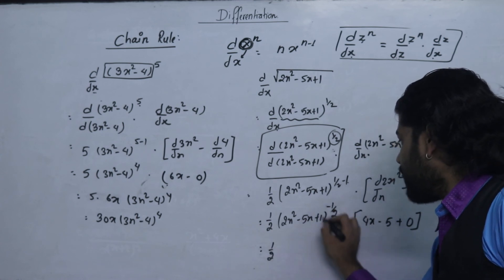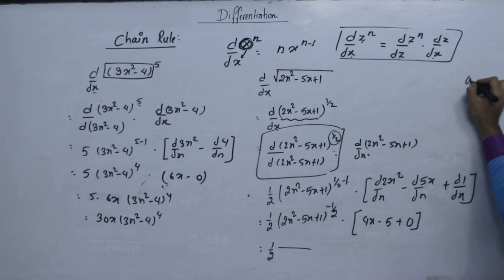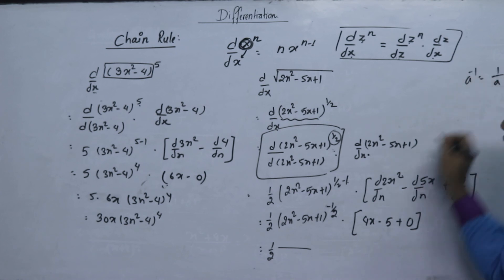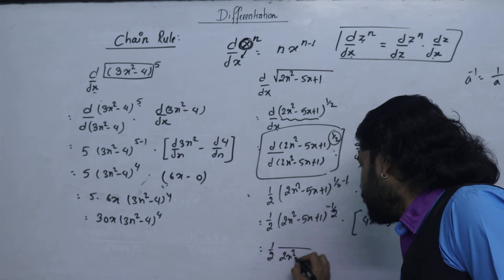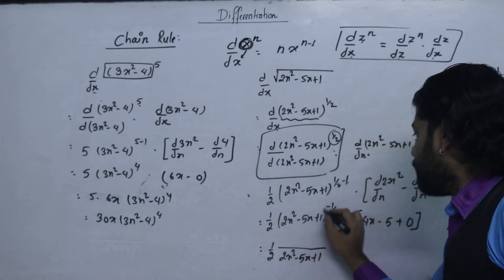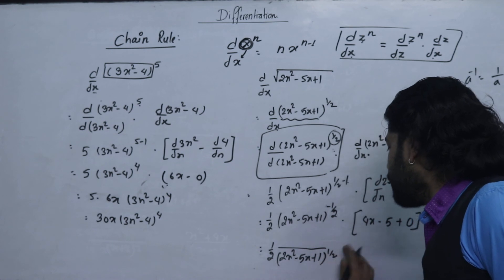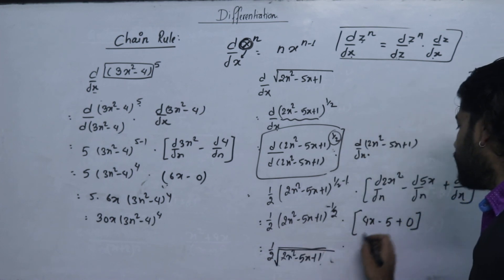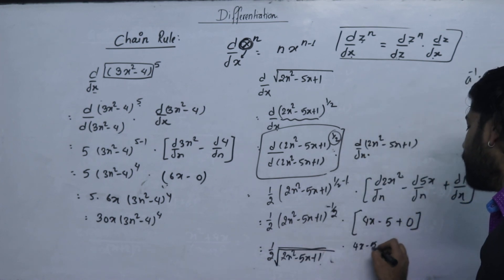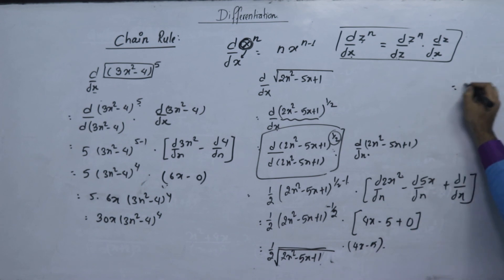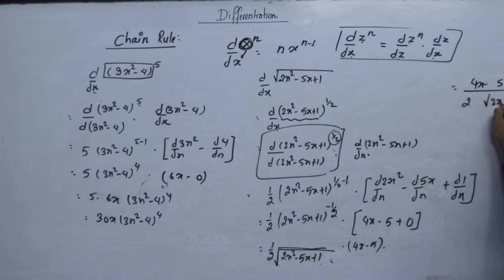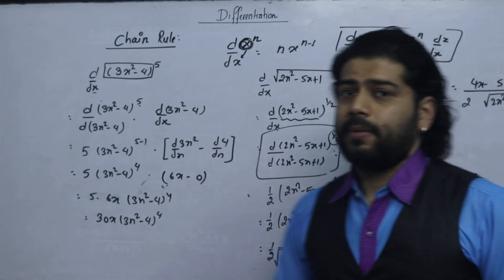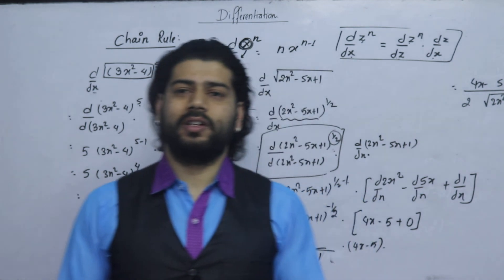So one by two, power minus one by two, times (2x squared minus 5x plus 1). The result is (4x minus 5) divided by (2 times the square root of 2x squared minus 5x plus 1). Now we have to learn the next class — we have solved this class. Thank you.